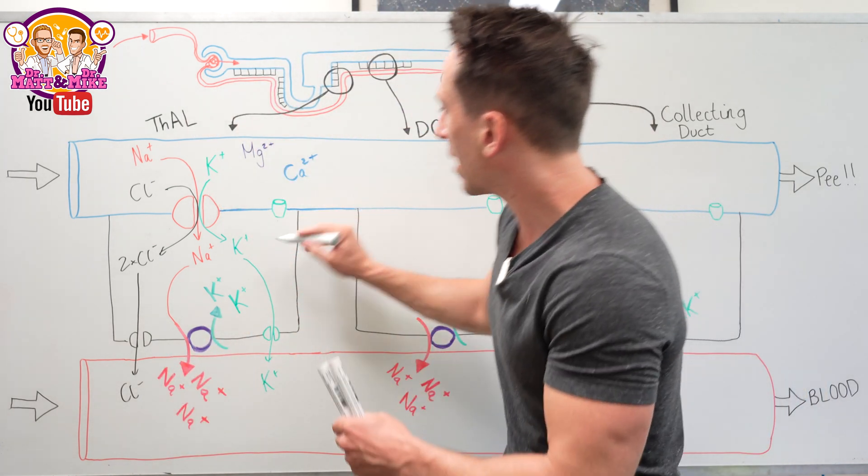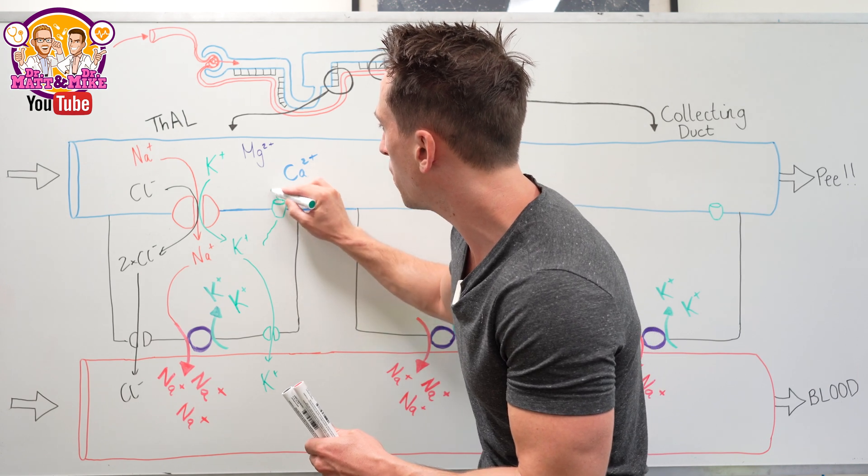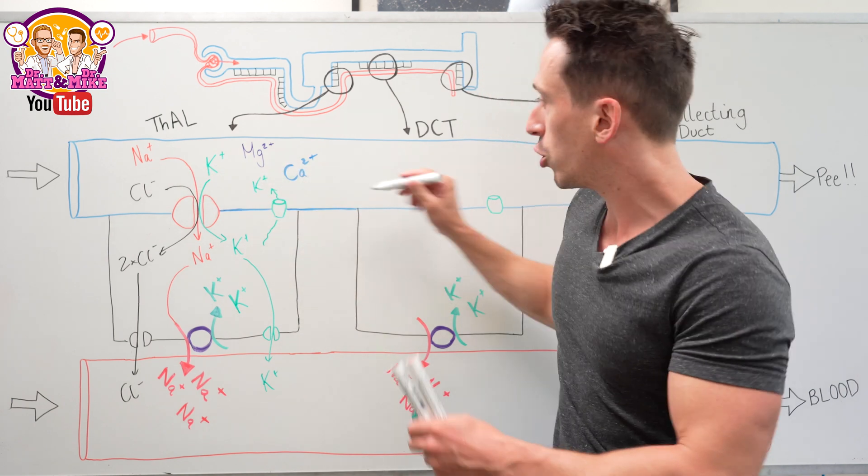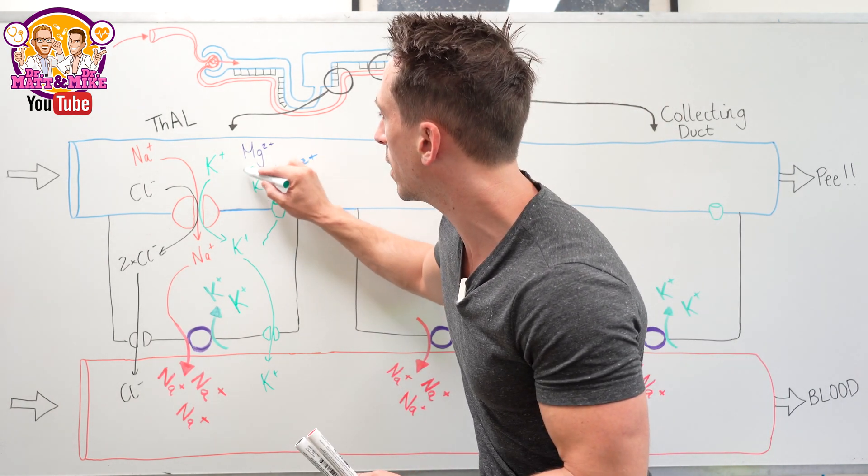Most of this potassium leaks out through leaky potassium channels, going back into the lumen of the tubule, carrying that positive charge with it.